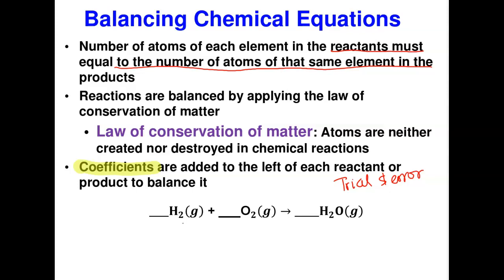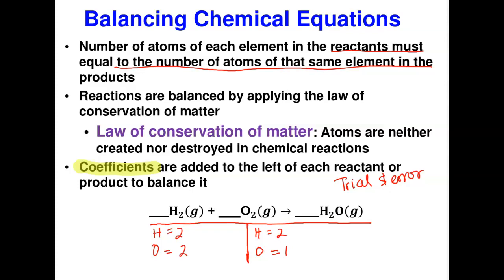Let's take an example. I advise students to start by counting the number of atoms on both sides of the equation. I draw a table: the right column represents the product and the left represents the reactant. Counting now — on the left I have two atoms of hydrogen and two atoms of oxygen. On the right I have two atoms of hydrogen and only one atom of oxygen.